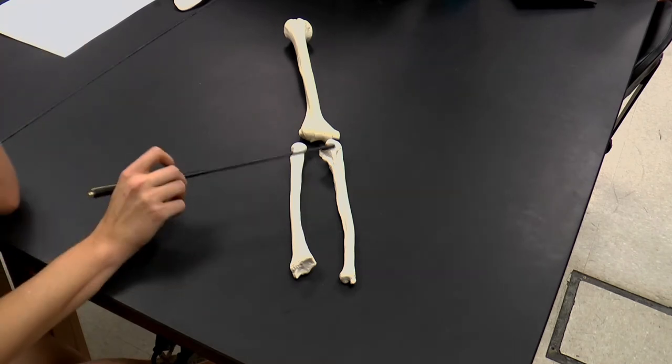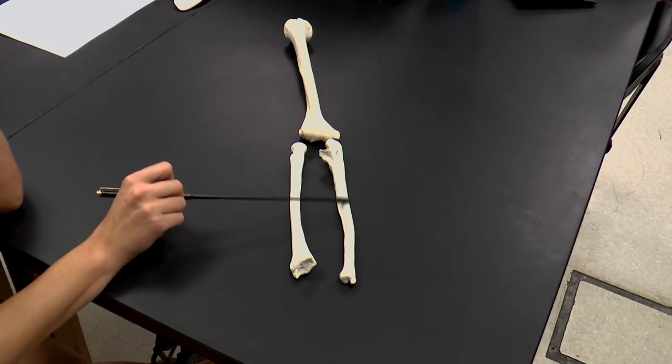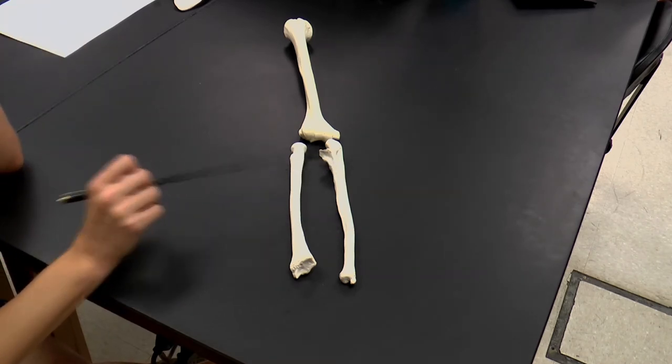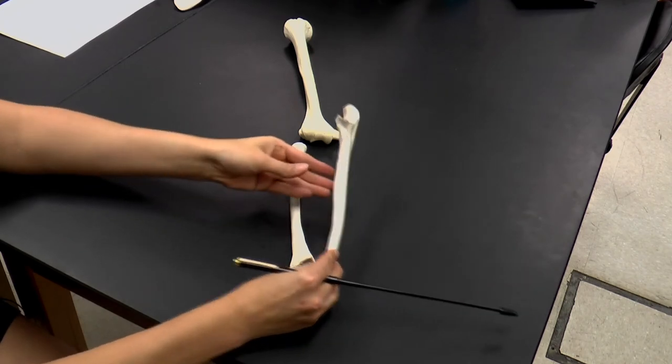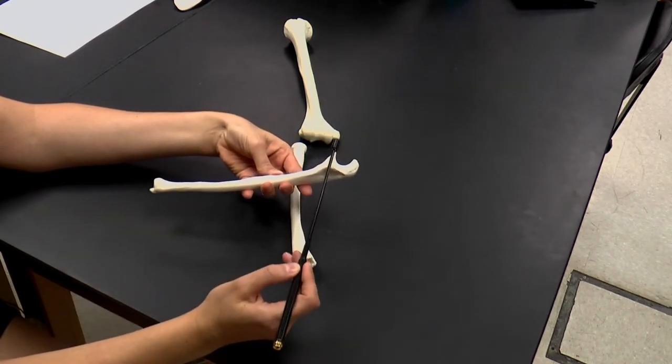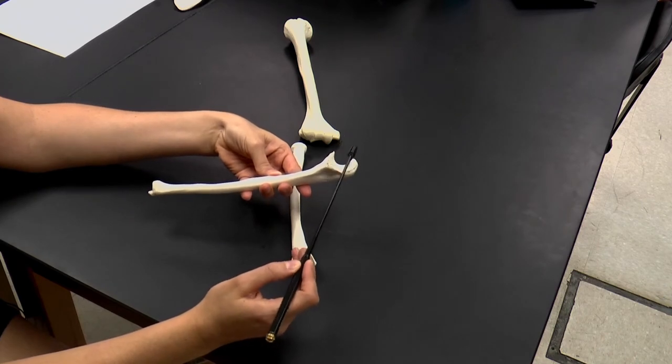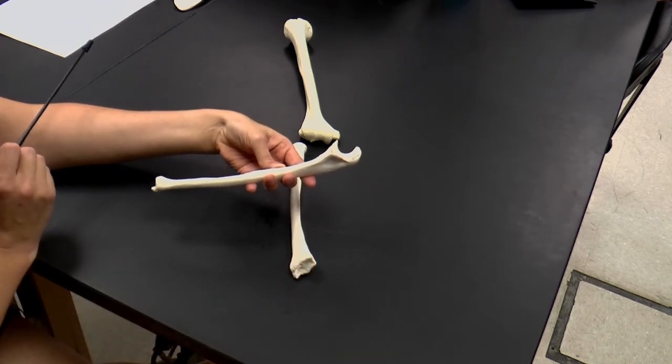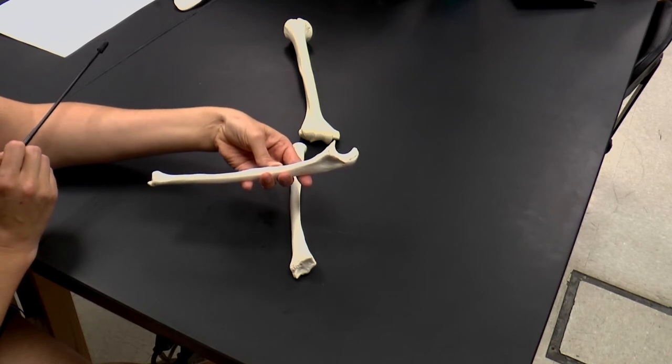And then here we have our ulna, which is our medial bone. And our ulna tells us which bone it is because if you can see it, I'm just going to turn it sideways. You can actually see that it has the first letter of its name in its structure. So you can see that looks a little bit like a U. So this is the ulna.